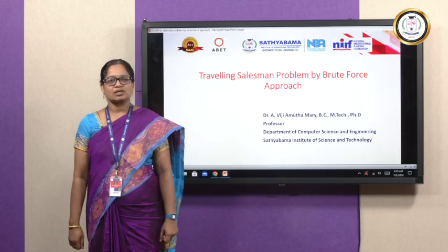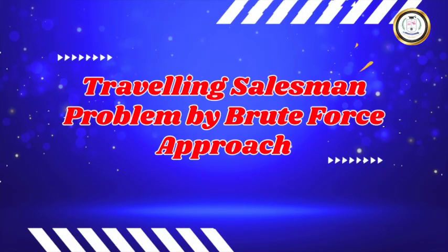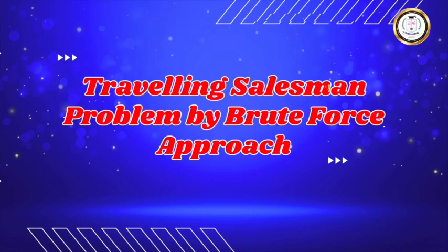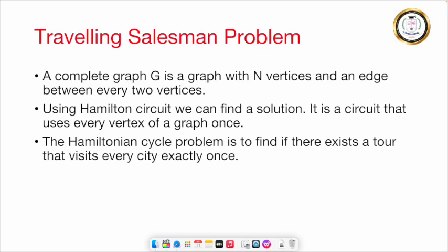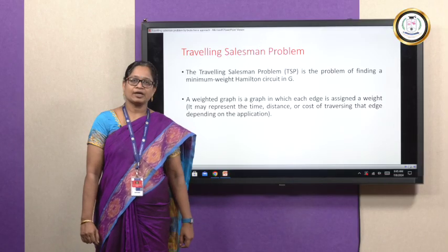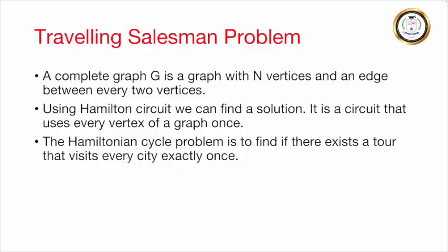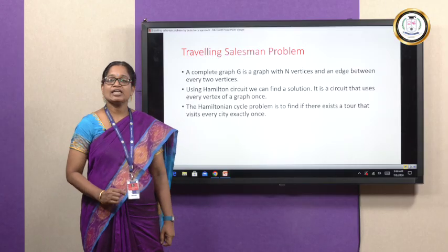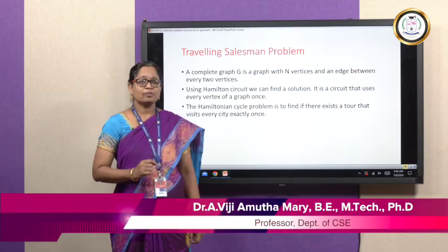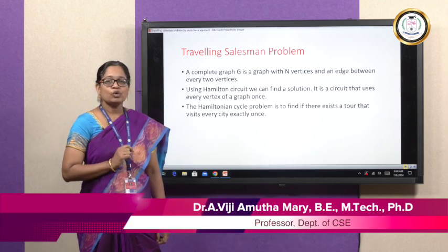Today we are going to discuss the Travelling Salesman Problem by brute force approach. The Travelling Salesman Problem is the problem of finding a minimum weight Hamiltonian circuit in a complete graph. We should know what is a complete graph and what is a Hamiltonian circuit. A complete graph is a graph with n number of vertices and an edge between each and every two vertices.